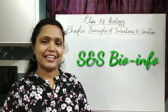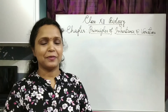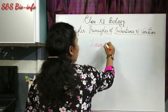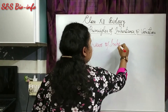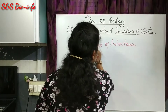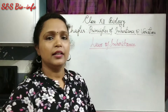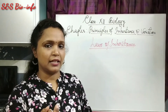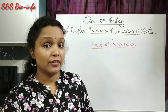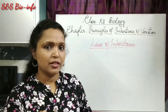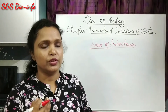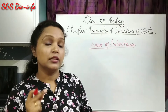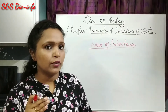Hi everybody, welcome to S&S Bioinfo. Today's topic is Laws of Inheritance. Gregor Mendel conducted several monohybrid crosses in garden pea plants, and based on his observations in F1 and F2 generations, he proposed two major laws: the law of dominance and the law of segregation.